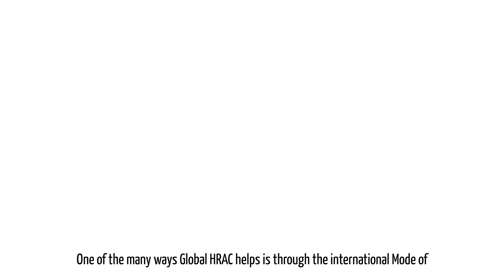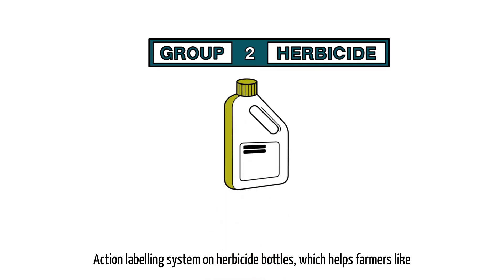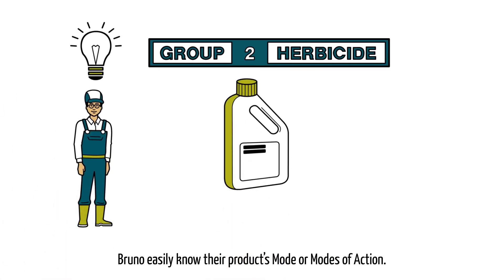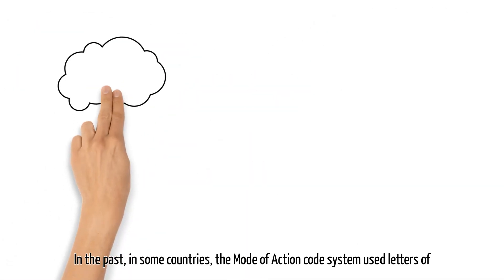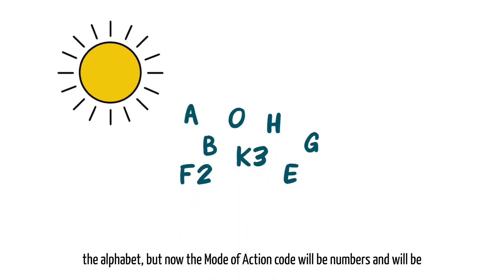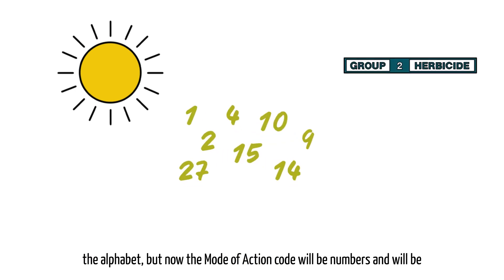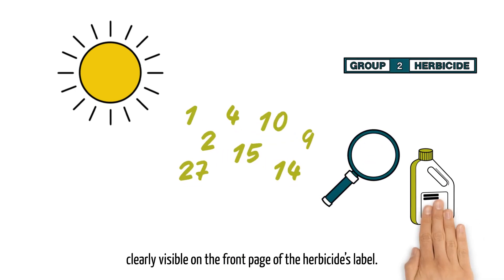One of the many ways Global HRAG helps is through the international mode of action labeling system on herbicide bottles, which helps farmers like Bruno easily know their product's mode or modes of action. In the past, in some countries, the mode of action code system used letters of the alphabet, but now the mode of action code will be numbers and will be clearly visible on the front page of the herbicide's label.